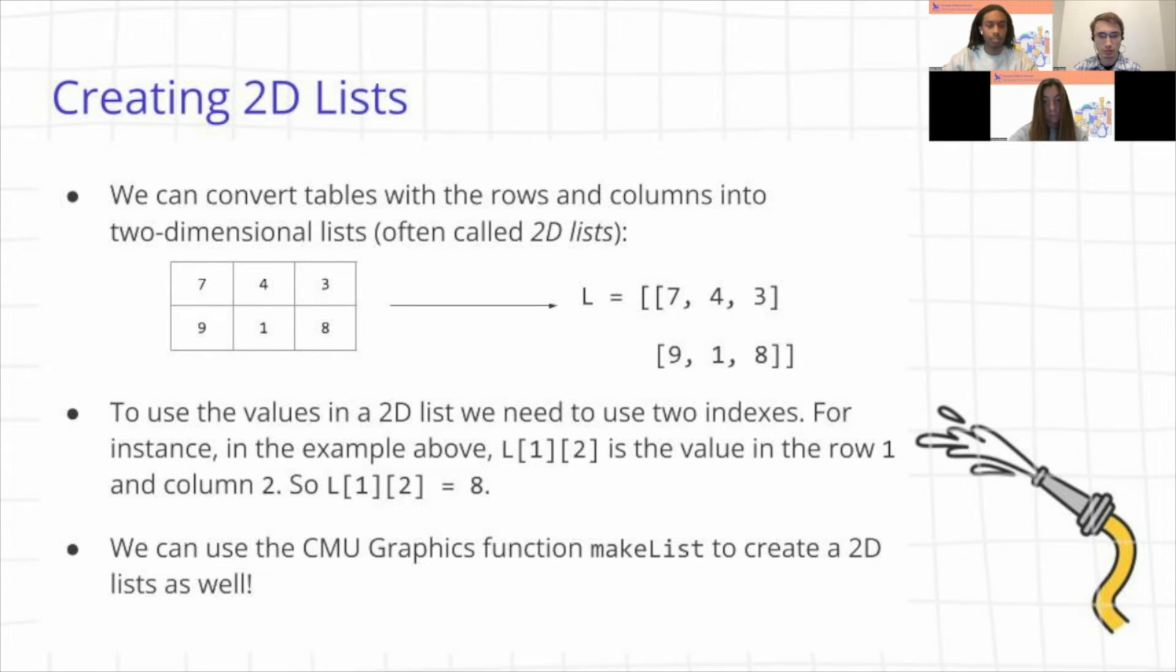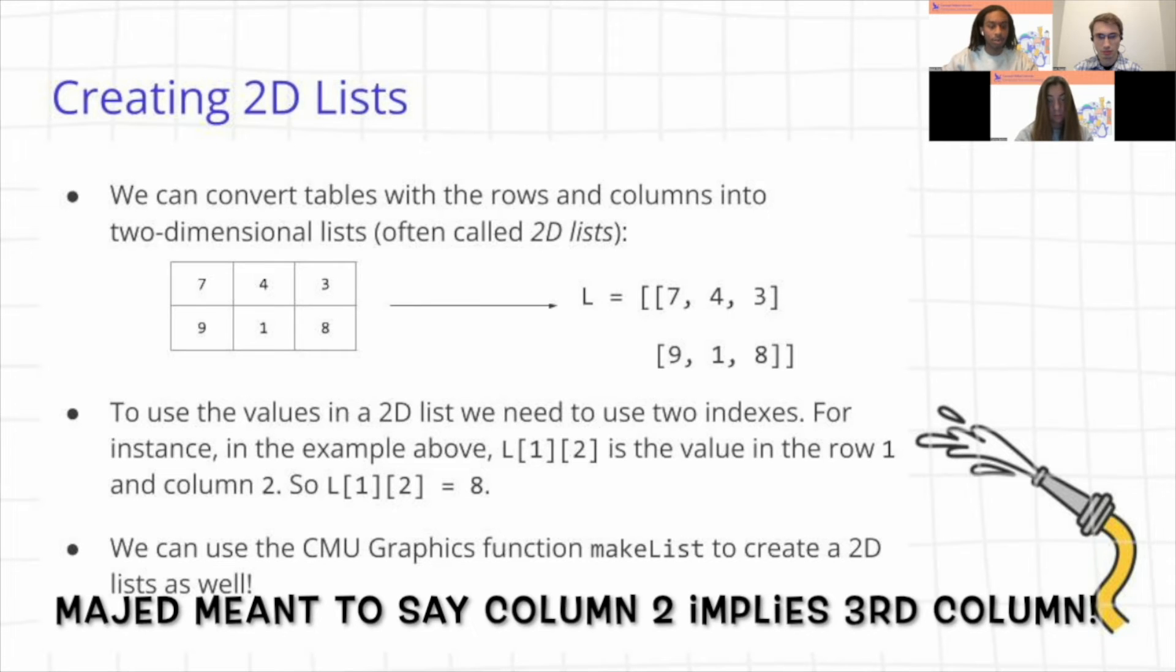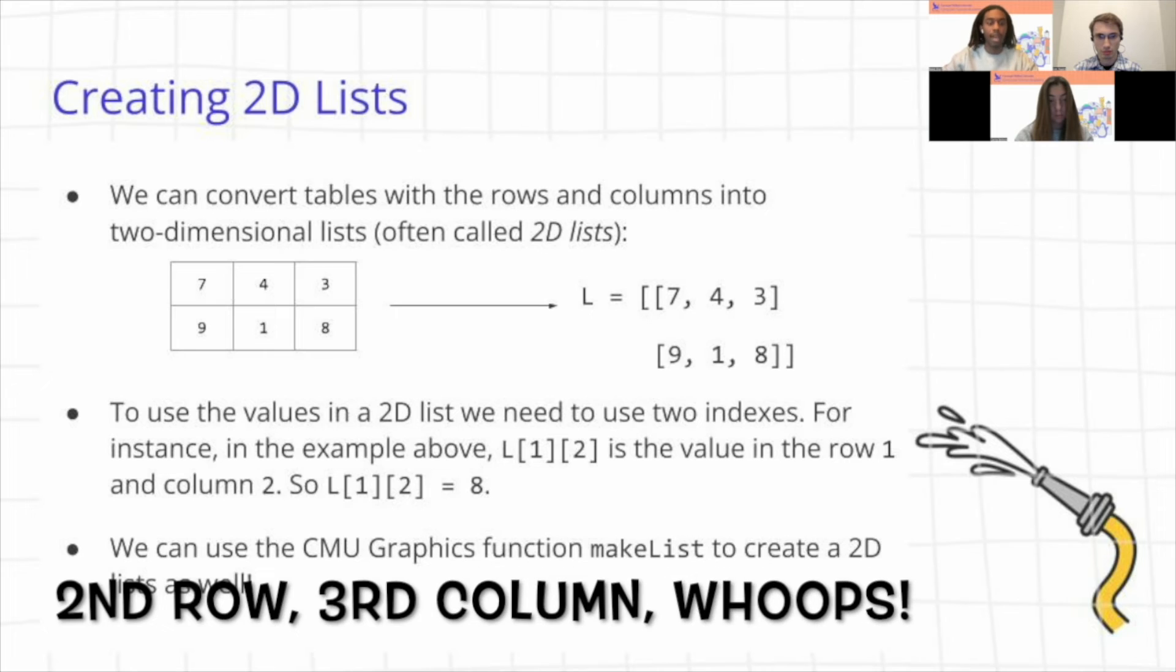But now with two indexes, we have the power of taking the value of the row and the column to represent the value in the 2D list. So in the example here, we have L of one and two. And what this essentially is saying is that L[1][2] is the value in row one. So if we look at the first row and we can see that in the second column, we actually have the value present at the column and the row. So that corresponds to eight. And also remember that when we're dealing with 2D lists, we always start with index zero. So when I say row one, essentially I'm implying the second row and column two implies the third column. So if we can look at the second row, third column, we can see that on our table, we have the value eight.